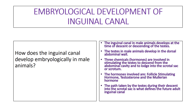As the testes descend from their position in the abdominal cavity to lodge into the scrotal sac, a canal is defined which eventually collapses. During this descent, the testes pull along other structures — including blood vessels, nerves, and lymphatics — and these structures end up lodged within the inguinal canal. This is how the inguinal canal is defined during embryological development.